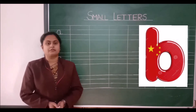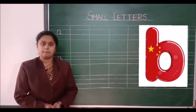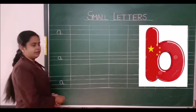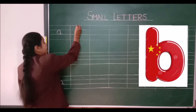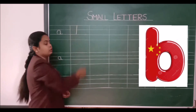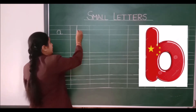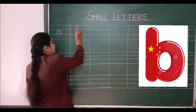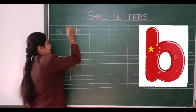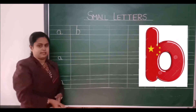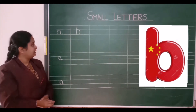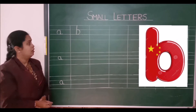Now let's move to our next letter — letter B, B for ball. To write letter B, first you have to make a standing line from first line to third line. Then you have to make a curve from second to third line like this. It is very easy to write small letter B.